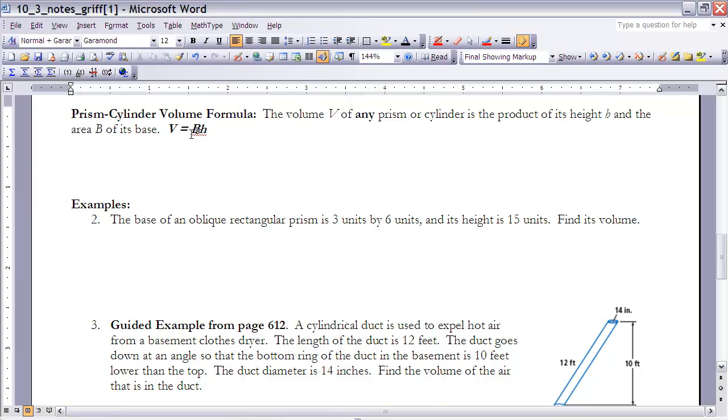All right, so let's take a look at example 2 here. It says the base of an oblique rectangular prism is 3 units by 6 units, and its height is 15 units. So let's find its volume. So as we established before, the volume of any prism or cylinder is the base times the height. So what we want to do is we want to start out with that formula volume equals the area of the base times the height. Now we're looking for volume, so I need to know what the base and the height is.